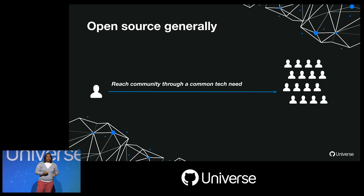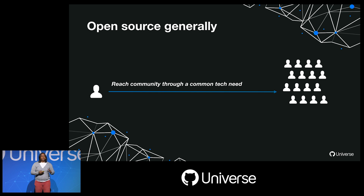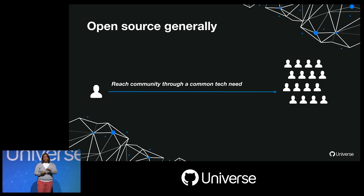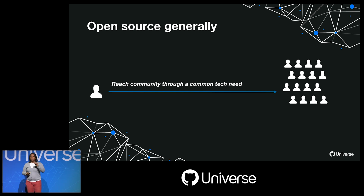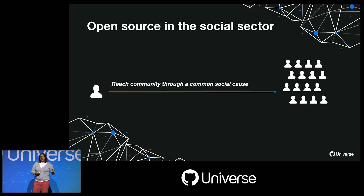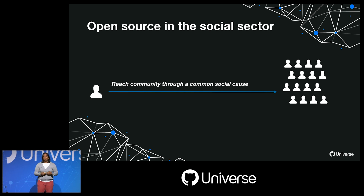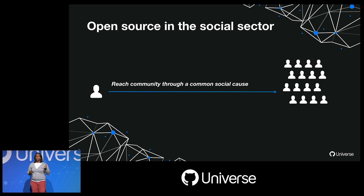One of the things Hara and I spoke about a lot is her efforts in building a community. In open source generally, a lot of projects start around a common tech need — you find the community through forums that care about that tech need, which makes building a community relatively straightforward. But in open source for the social sector, more often than not, the community is built around a common social cause. The people who care most about that cause may not be at GitHub Universe or tech conferences. So how you market and build that community is not nearly as straightforward — you have to go to where those people who care about the cause are, even if they're not open source advocates.